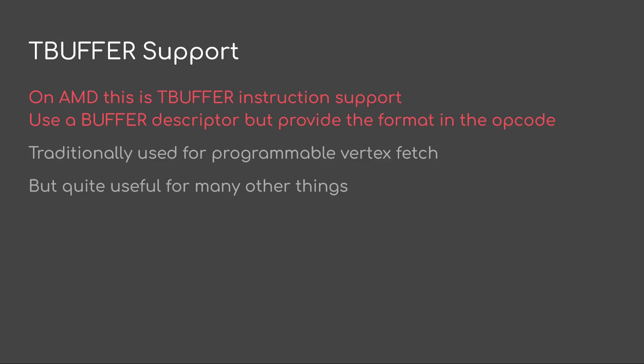Another thing that's definitely missing is T-buffer support. For AMD hardware, this is the instruction where you're using a buffer descriptor but providing the format in the opcode instead of using the one in the buffer descriptor. Traditionally used for programmable vertex fetch, but quite useful for many other things. It would be nice to get this in the API for portable use, though this one probably requires a lot of discussion on how to make it portable across other hardware.